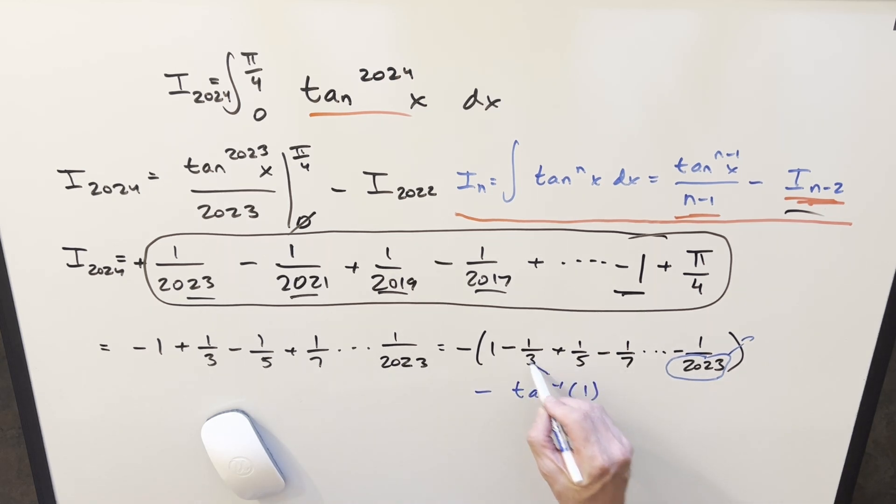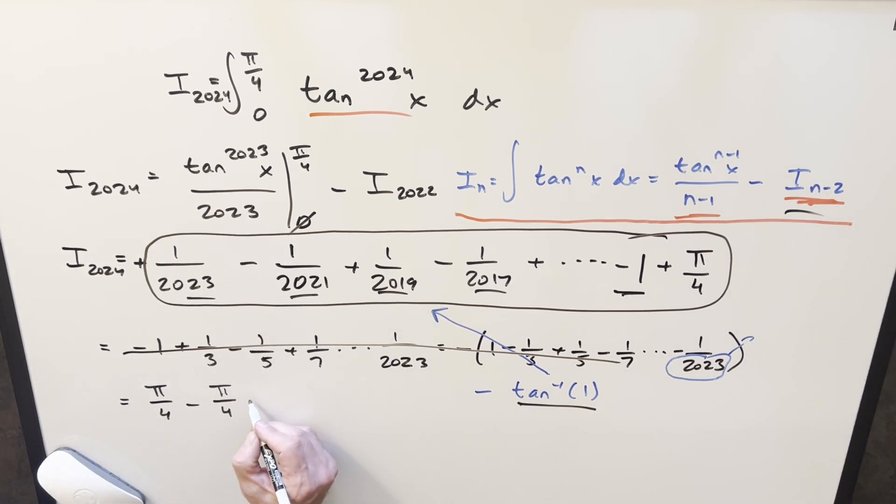So we just need to take that and plug it back in for our solution. So we're going to have pi over 4 minus, but arctan at 1 is also going to be pi over 4. So for our solution to this, we get approximately 0. Let me show that this is an estimate because it's not going to be exact.